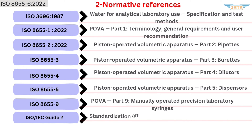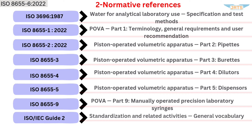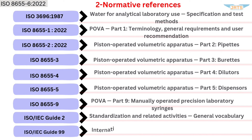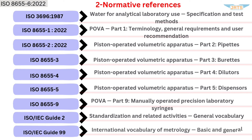ISO/IEC Guide 2 — Standardization and Related Activities: General Vocabulary. ISO/IEC Guide 99 — International Vocabulary of Metrology: Basic and General Concepts and Associated Terms (VIM).